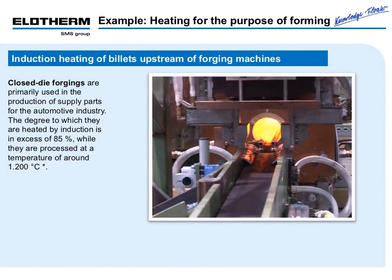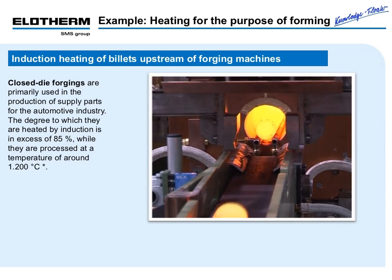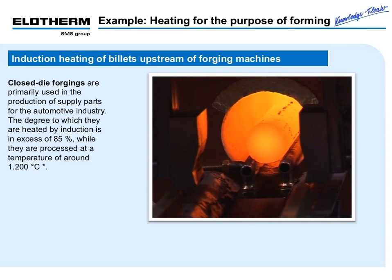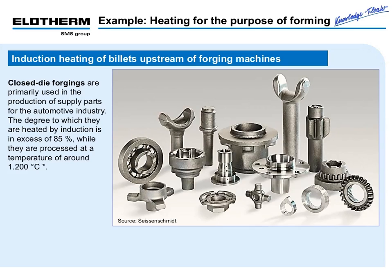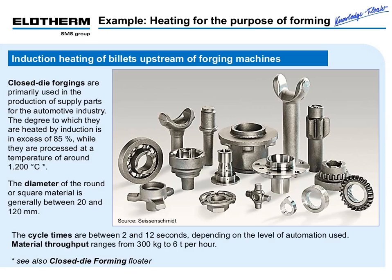Example 1 shows induction heating of billets for a subsequent closed-die forging operation. A large production volume of automotive parts — more than 85% — is induction heated and forged at around 1,200 degrees Celsius. The diameter of the round or square material is usually between 20 and 120 mm. Cycle times are between 2 and 12 seconds, depending on the level of automation used.